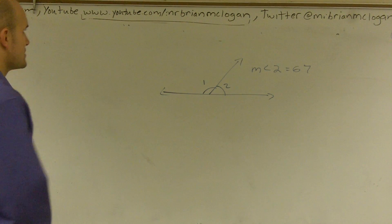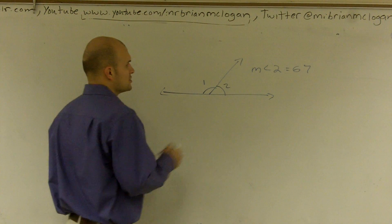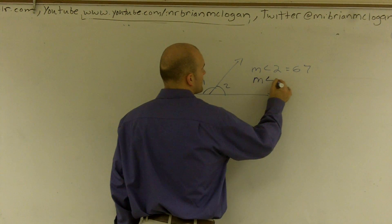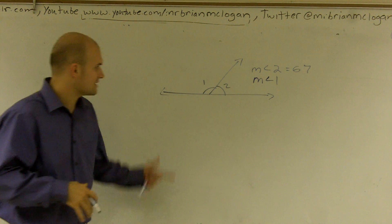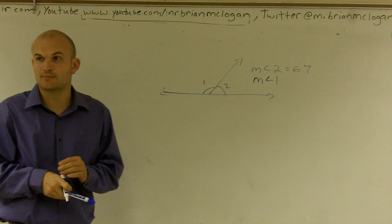OK, what I'd like to do is show you how to find the measure of angle 1 when the given measure of angle 1 and measure of angle 2 are what we call a linear pair.